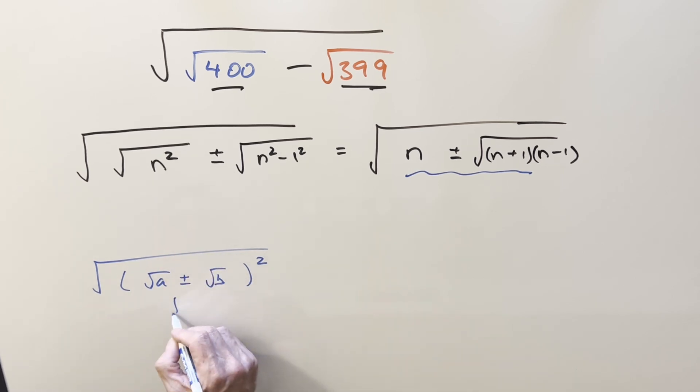And we'll want this to be something like square root of a plus or minus square root of b. Because with the square inside the square root, this thing is going to be just this. And we can ignore absolute value, assuming that a is greater than b.